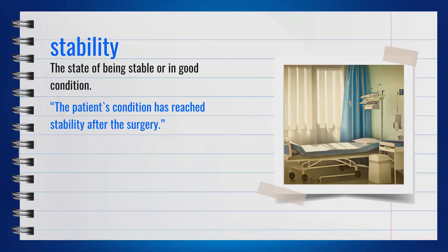The word stability, spelled S-T-A-B-I-L-I-T-Y, is a noun. Stability refers to the state of being stable or in good condition. It's similar to words like steadiness and firmness. For example, the patient's condition has reached stability after the surgery. In summary, stability means being in a stable or good condition.